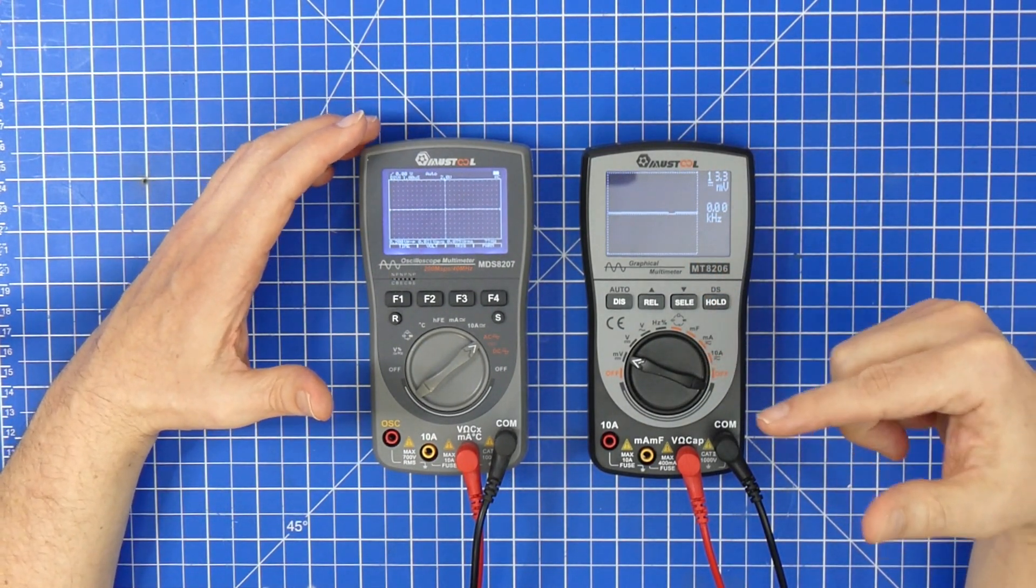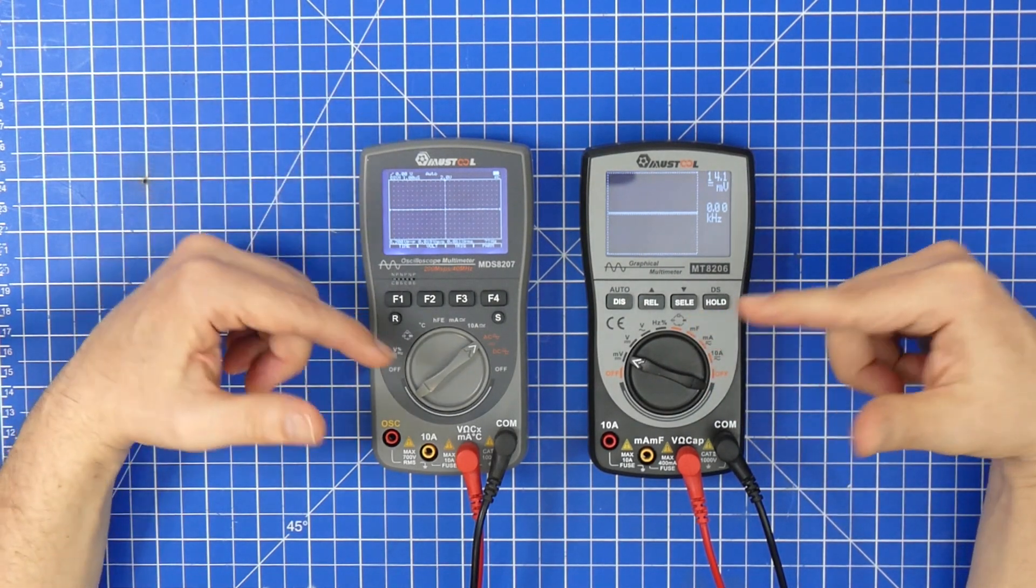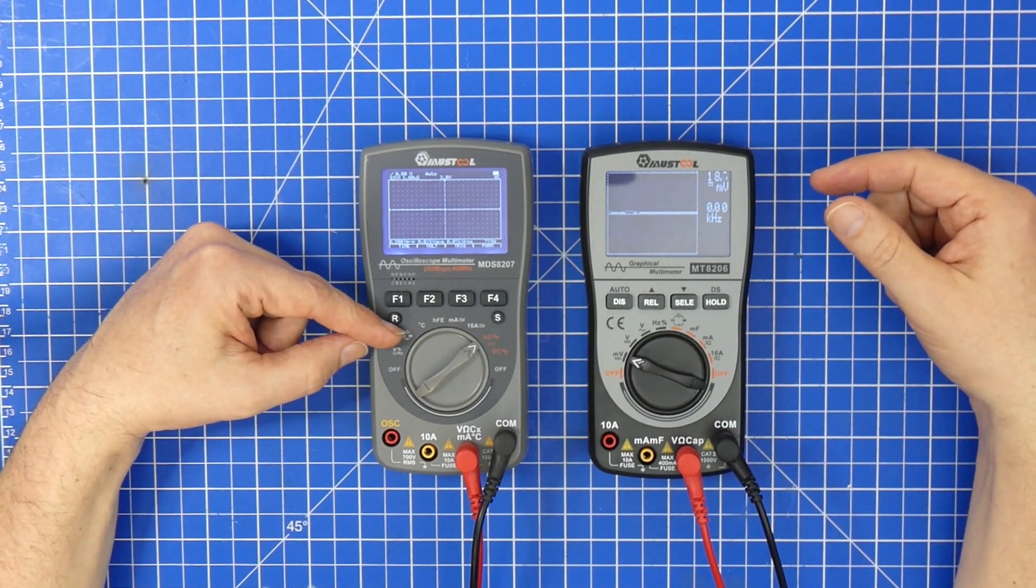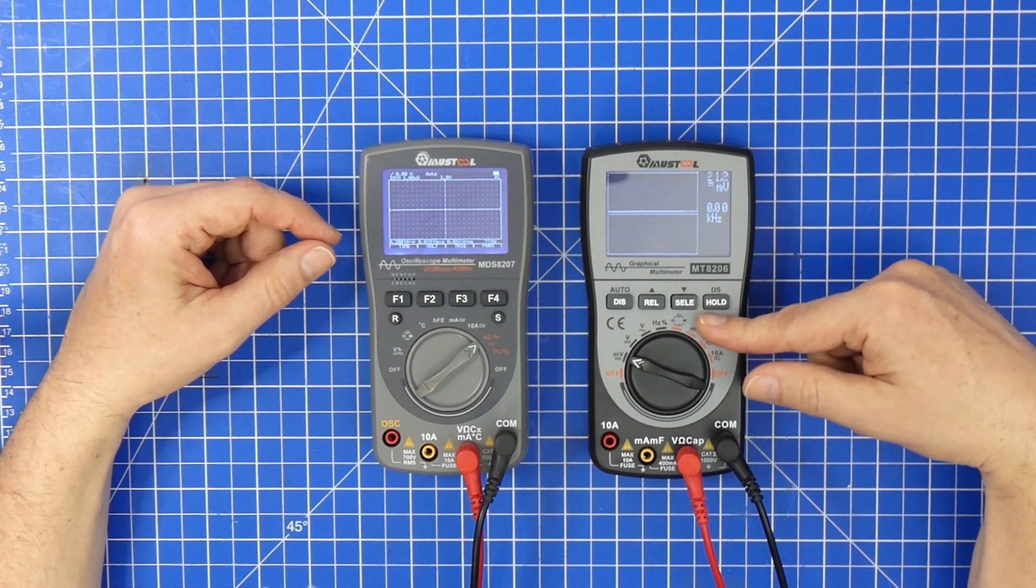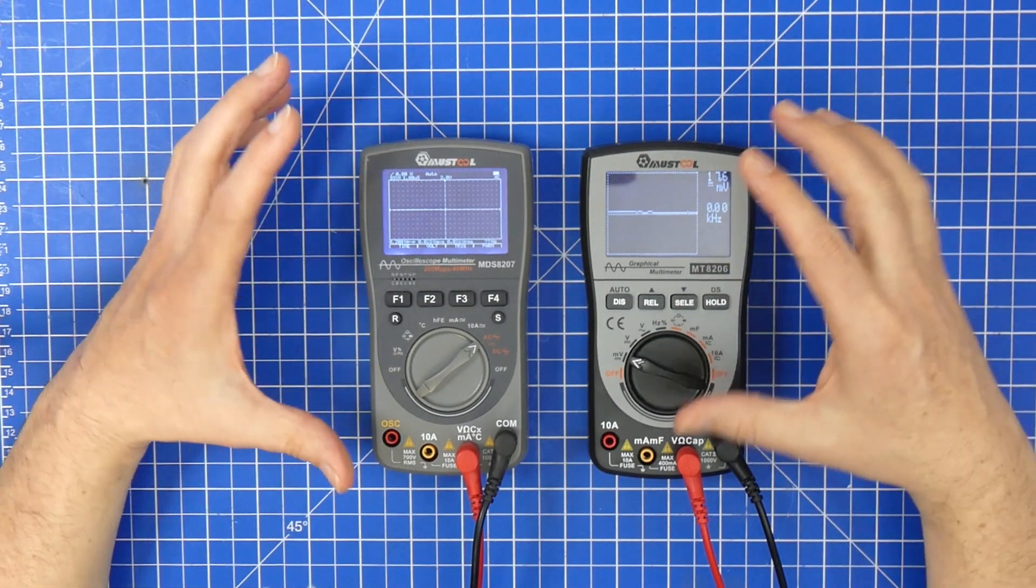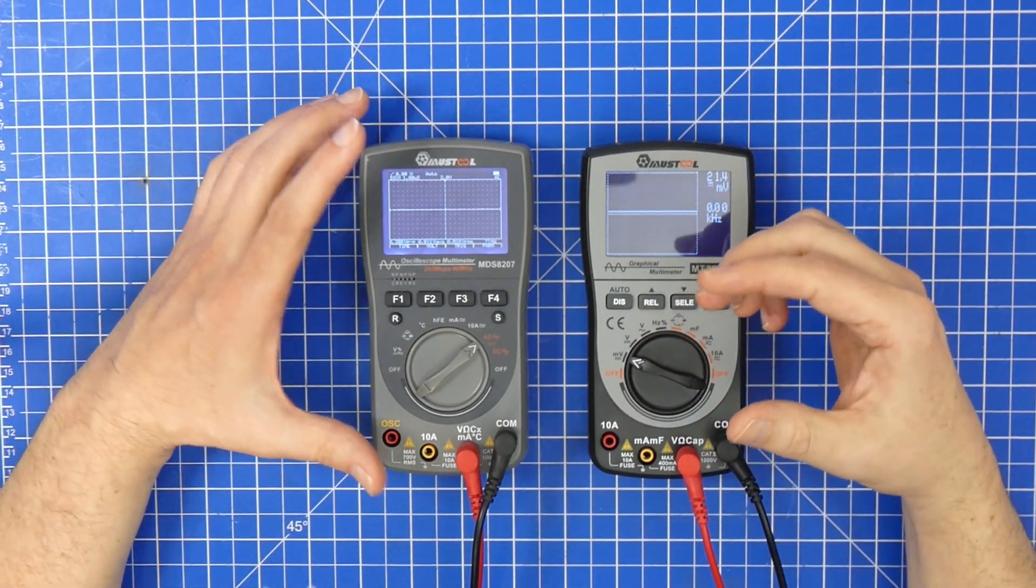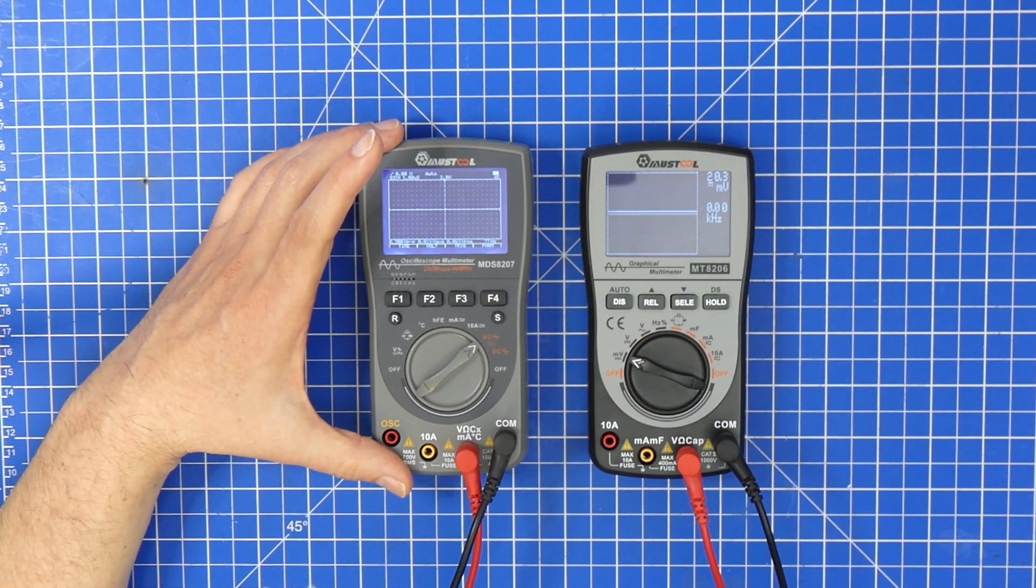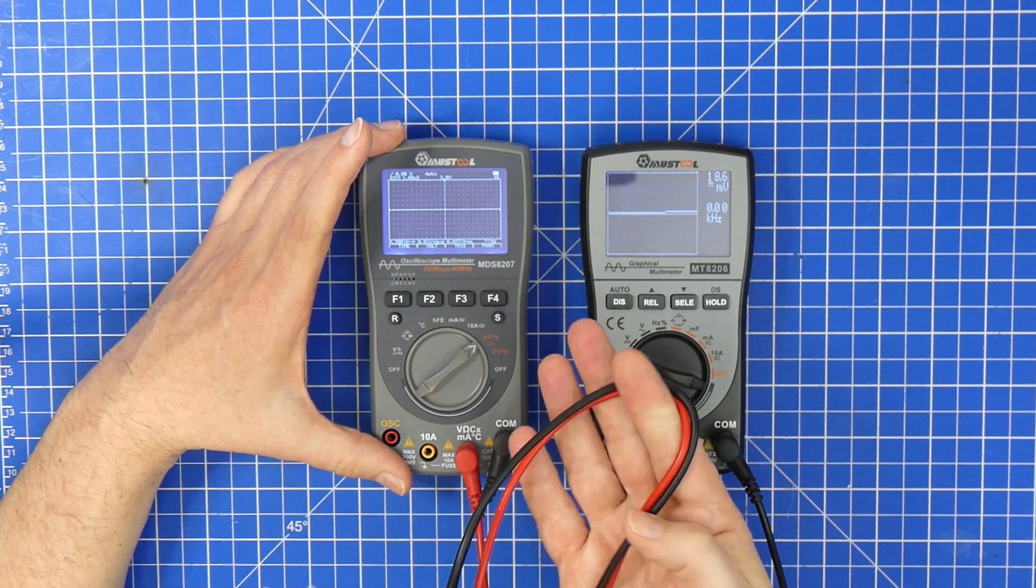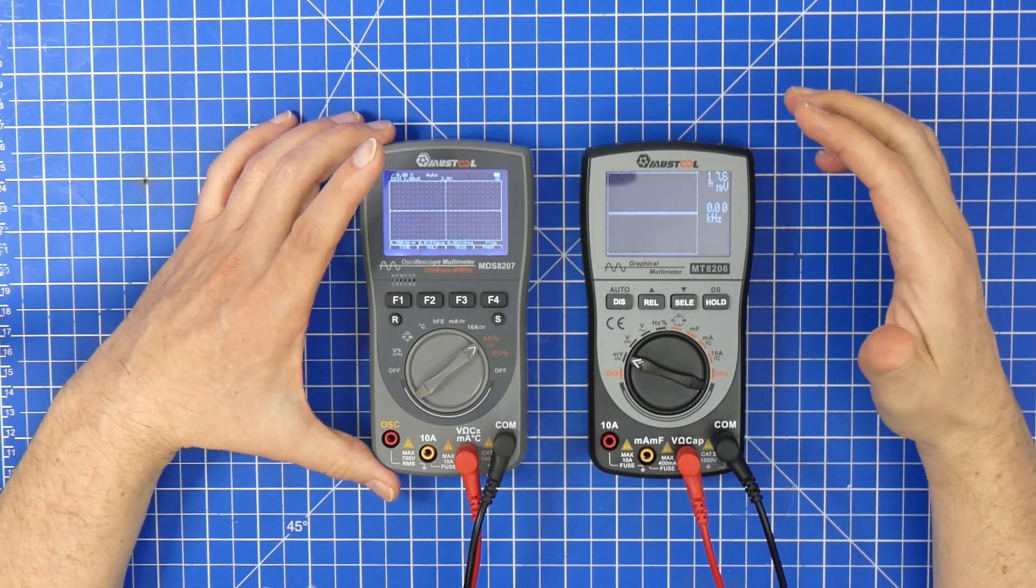Taking numbers between the two, this thing had 200 kilosamples per second, this thing has 200 megasamples. The bandwidth of this was 20 kilohertz, this thing has 40 megahertz. Where the 40 megahertz is present but you're not going to get most of the 40 megahertz through these cheap cables, so take that with a grain of salt.